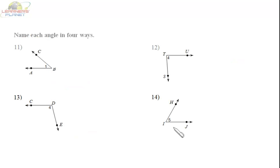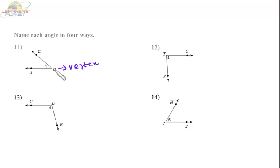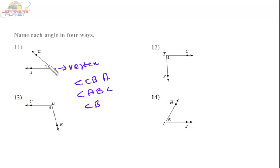Similarly, D is the vertex and DE and DC — two rays — are the sides of this particular angle. Now in this question we have to name the angles in four ways. Here we see angle CBA: ray BC and ray BA are meeting at point B, so B is the vertex. Any angle can be written by putting the vertex in the middle. So it can be written as angle CBA or angle ABC, or simply angle B, or angle 1. These are the four ways.